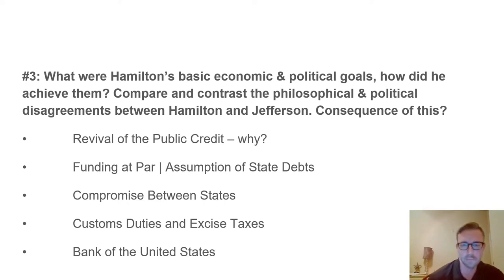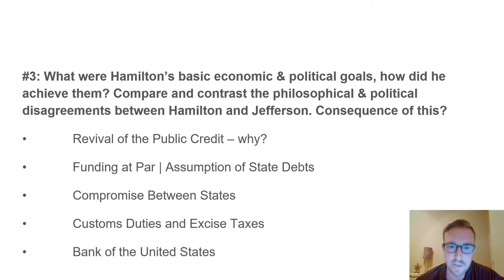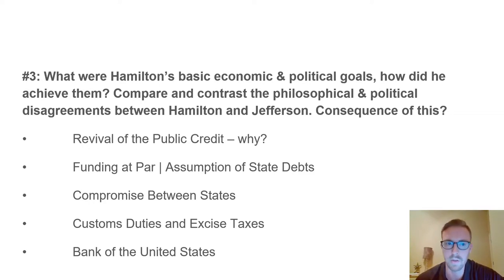Things get interesting because Washington placed two individuals who disagreed philosophically in key roles: Alexander Hamilton and Thomas Jefferson. The next discussion question asks: what were Hamilton's basic economic and political goals and how did he achieve them? Compare and contrast the philosophical and political disagreements between Hamilton and Jefferson and their consequences. Some political scientists argue this debate is the impetus for what we see today between the left and the right—how far should government go and how much should be retained by the people and states.